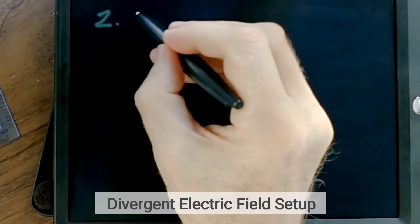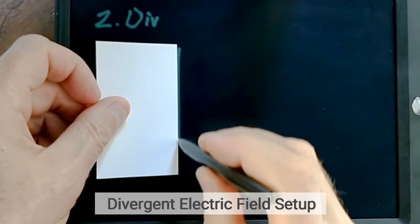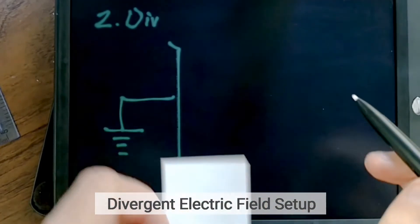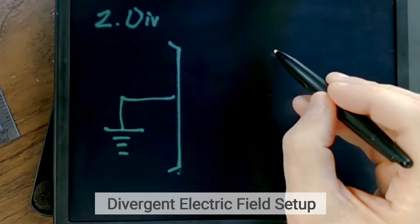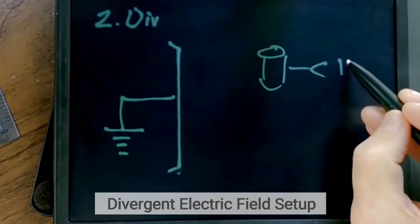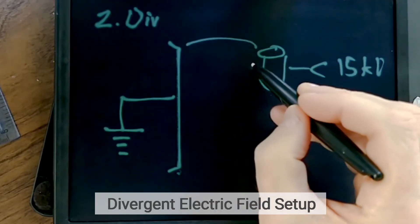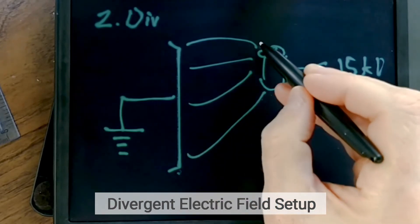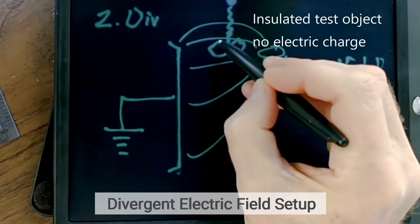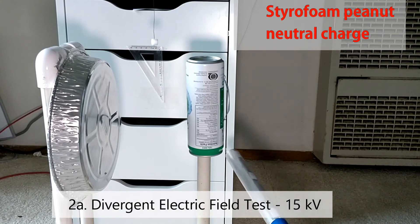In the second series of tests we produce a divergent electric field. The grounded side of the capacitor is connected to earth ground as before, but on the other side we have a cylinder soda can connected to a 15-kilovolt miniature Van de Graaff generator. This produces diverging electric field lines, and we dangle a test object in that area to see if there are any forces on it.